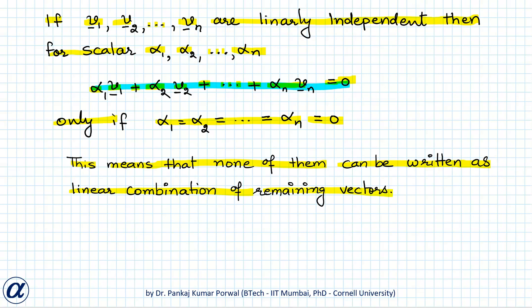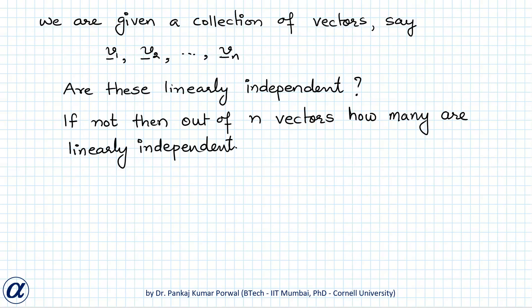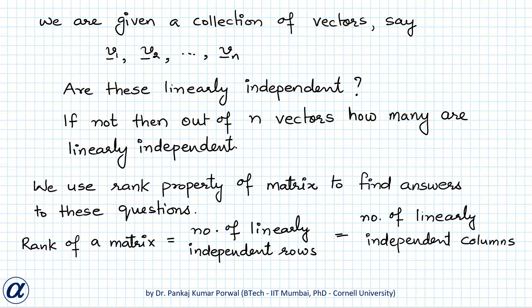Even though it is important to understand this definition of linear independence, it is not very useful in solving questions, because even when we know that given vectors are linearly independent, it is very difficult to express any one vector as a linear combination of the remaining ones. In practice, we are given n vectors and asked whether they are linearly independent, and if not, how many are. To solve these questions, we use the rank property of a matrix.